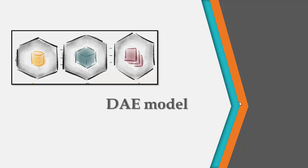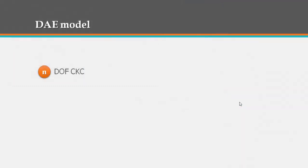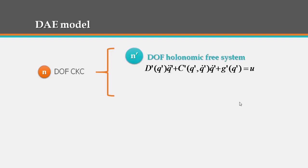Well, let's do our model. In fact, the behavior of the n degrees of freedom closed kinematic chain is considered to be an n prime degrees of freedom holonomic free system on which p holonomic constraints are imposed.